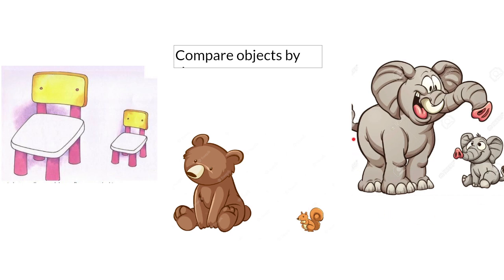Now let's take a look at the elephants. This elephant is a big elephant and this elephant is a small elephant. So this is the way we compare objects by size — we use the words small and big.